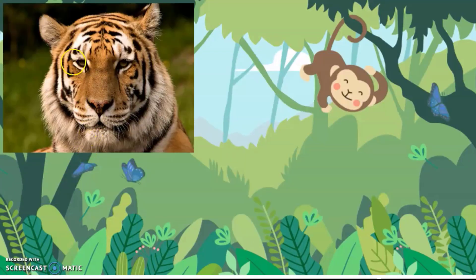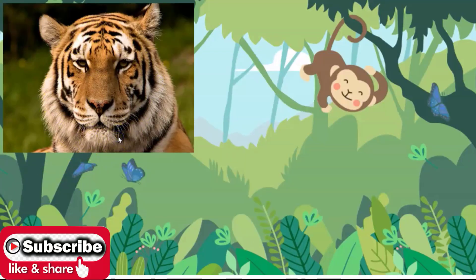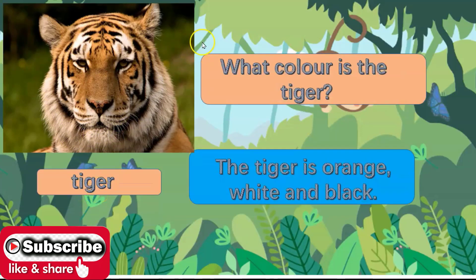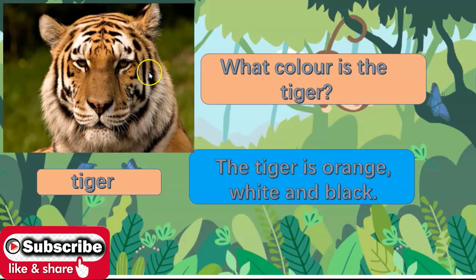Do you know what animal is this? Yes, it's a tiger. What colour is the tiger? The tiger is orange, white and black.